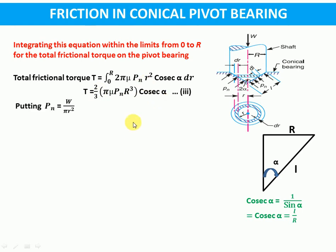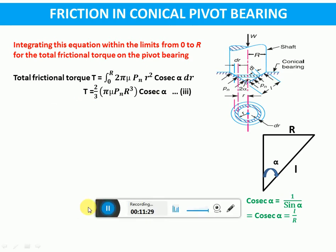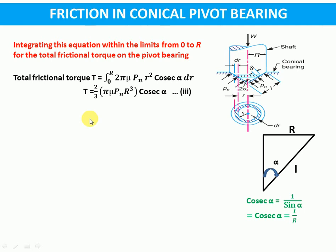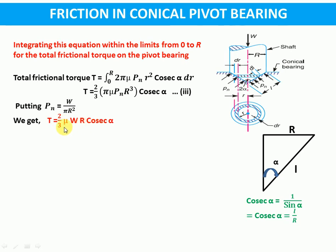Now put the value of pn as W upon πR². We get T equals (2/3)·mu·W·R·cosecant alpha. Also, R·cosecant alpha can be written as L, so we can write T equals (2/3)·mu·W·L, where mu is coefficient of friction, W is axial load, R is radius of shaft, and alpha is the semi-cone angle.